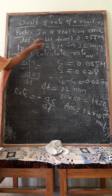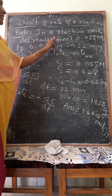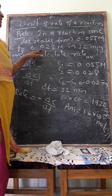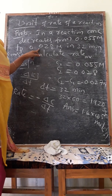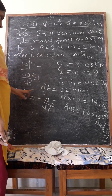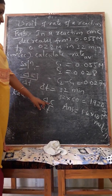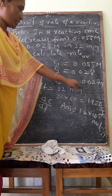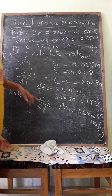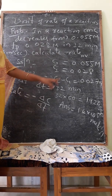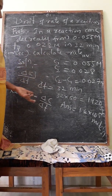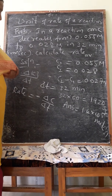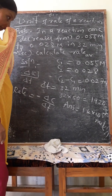The problem states concentration decreases. C1 is the initial concentration, C2 is the final concentration. C2 minus C1 gives delta C = 0.027. Converting minutes to seconds gives the final answer of 1.4 × 10⁻⁵ mol per liter per second.